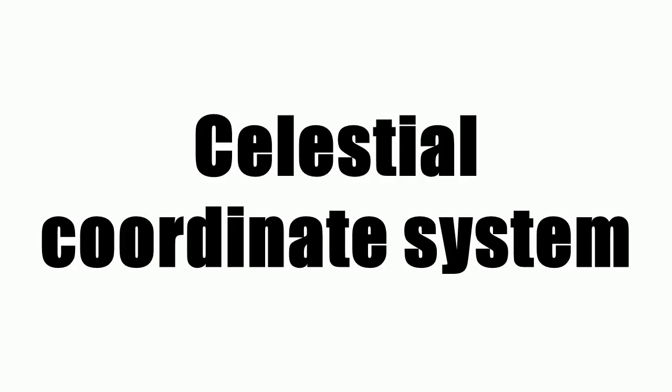In astronomy, a celestial coordinate system is a system for specifying positions of celestial objects: satellites, planets, stars, galaxies, and so on.